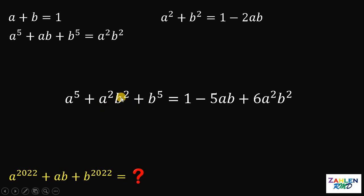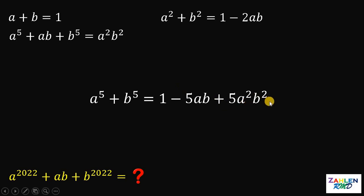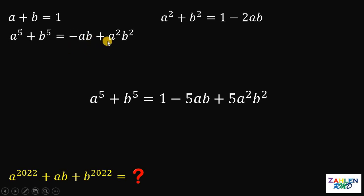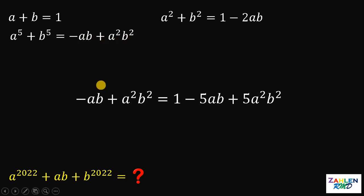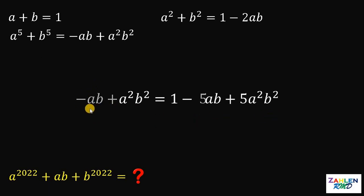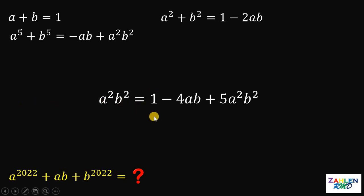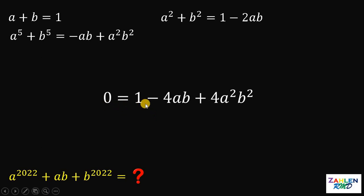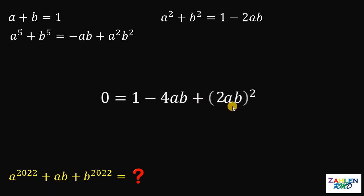Subtracting a squared b squared from both sides, we have a raised to the fifth power plus b raised to the fifth power on the left. Now the second equation comes into play: a raised to the fifth power plus b raised to the fifth power equals negative ab plus a squared b squared. Substituting this in, then adding ab and subtracting a squared b squared from both sides, gives 0 equals 1 minus 4ab plus 4a squared b squared. Notice that 4 is 2 squared, so this is a perfect square trinomial: 0 equals (1 minus 2ab) squared.